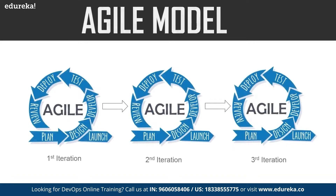The next model is the agile model. In this model, the software is broken down into various iterations, each having phases such as planning, design, development, and so on. The duration of each iteration is generally two to eight weeks. In the agile model, you release the software in the first iteration, gather feedback from end users, incorporate those changes into the second iteration, and then release again. You repeat this procedure for subsequent iterations.